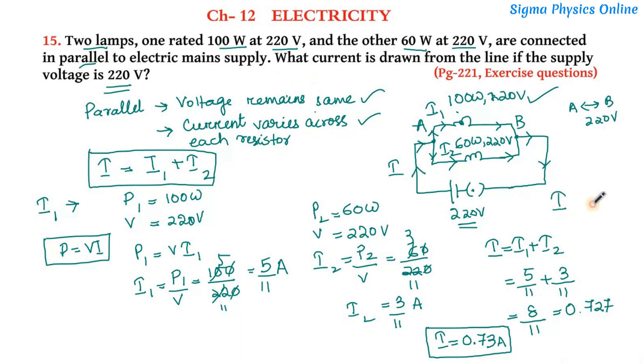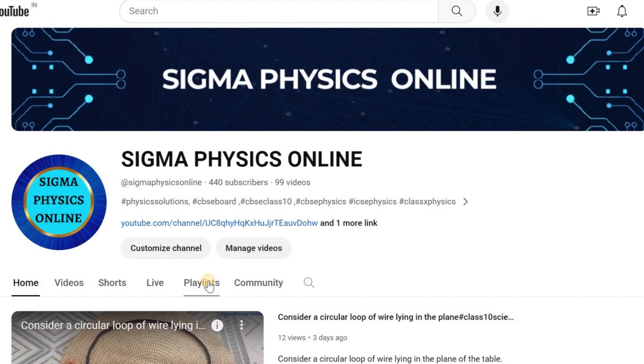through the line is 0.73 ampere. It will not be a mistake if you write 0.72, that will also be correct. So this is the answer to this question. I hope you have understood it. If this video was helpful to you please do like it, share it, and subscribe to the channel. Thanks for watching.